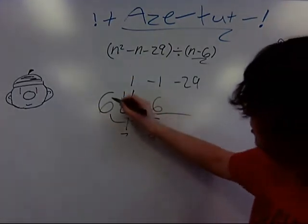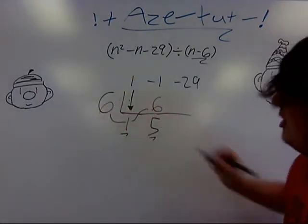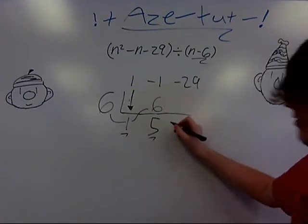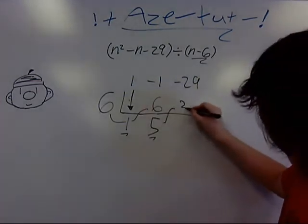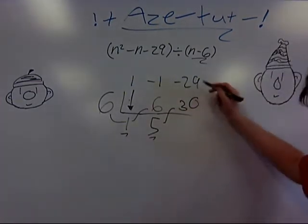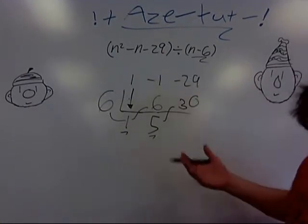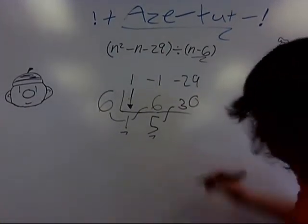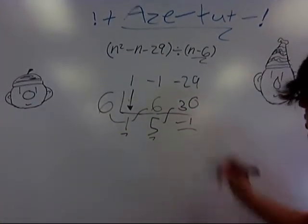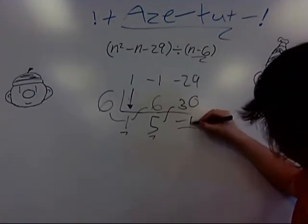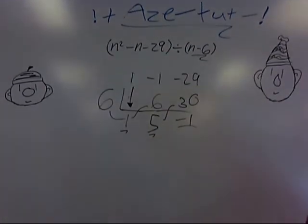So there you go. Then you're going to want to multiply this number and this number. 6 times 5. You guessed it. 30. Now, 30 plus negative 29 as we all should know. Come on, kids. You're in high school. Negative 1. Great. That 1 is really short. Now it's a proper 1.